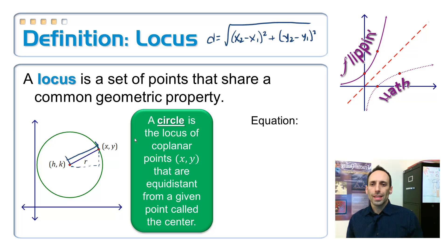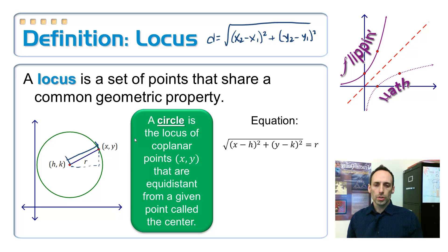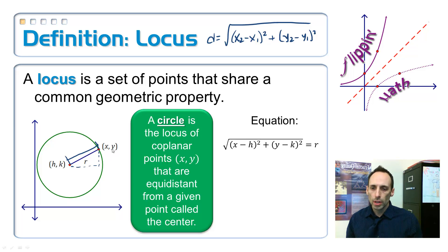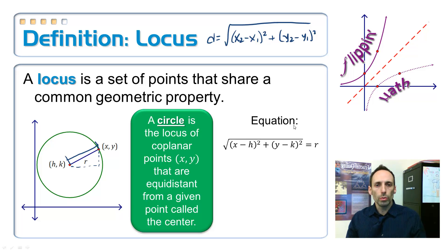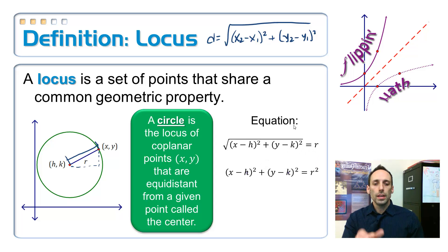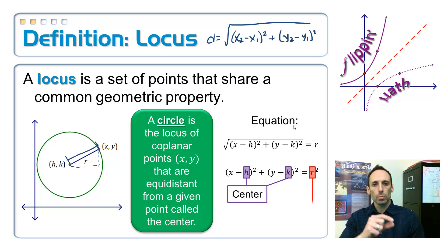I'm going to apply that distance formula to the picture we have. It goes like this: the square root of (x minus h) squared plus (y minus k) squared, all equal to the radius. We usually don't see it written with square roots, so to get rid of that square root, I just square both sides of the equation.